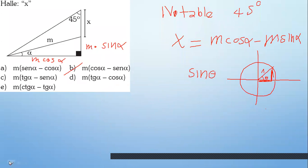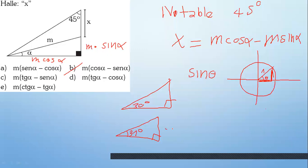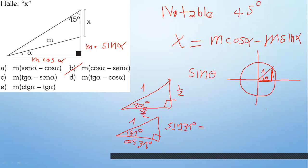¿Por qué hay notables conocidos y unos que no? Estos son casos especiales. Para 30 grados el valor es concreto: un medio, raíz de tres medios. Para 31 grados te van a salir infinitos decimales, no hay una regla general. Si tienes calculadora, pones seno de 31 y te da el resultado. Si no, haz una circunferencia con tu transportador en 31 grados y te va a salir el valor.